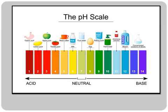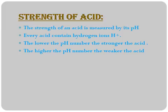Looking at the alkaline range: egg is slightly alkaline. Baking soda and hand soap are alkaline. Bleach is more strongly alkaline. The strength of an acid is measured by its pH. Every acid contains hydrogen ions. The lower the pH number, the stronger the acid; the higher the pH number, the weaker the acid.